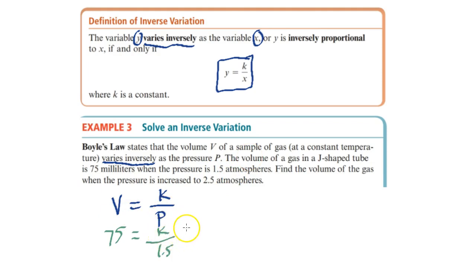In this case, since we have an inverse variation, we have something on the denominator, so we must multiply to get it out of the denominator. And that will give us k equals what is now 1.5 times 75, which is 112.5.